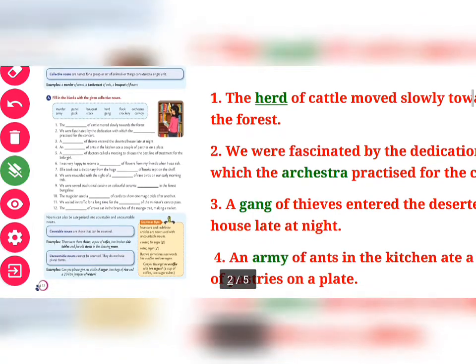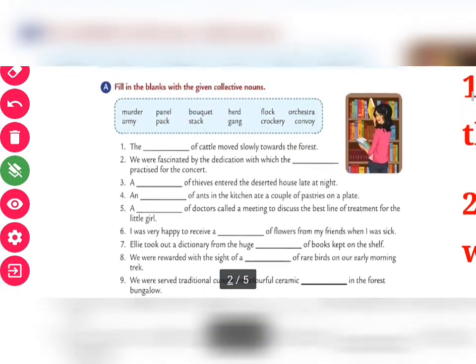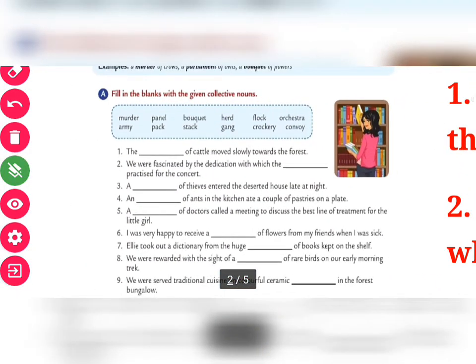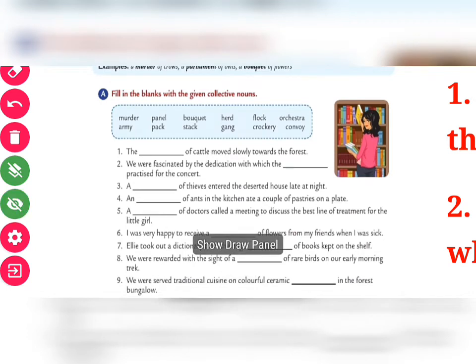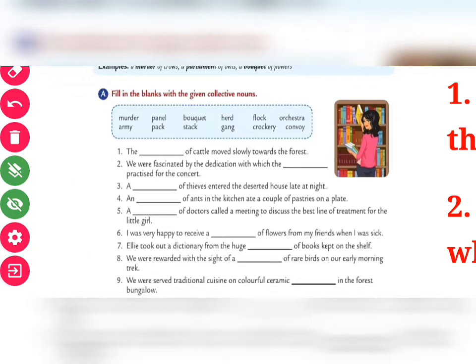Now on page number 12, there is a fill-in-the-blanks exercise with collective nouns. You have to fill in the blanks with the given collective nouns from the box. For example: "A herd of cattle move slowly towards the forest." Students, please take out your book, page number 13 — I am just reading from there.